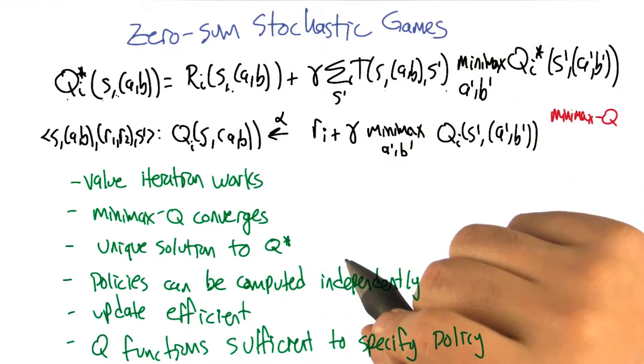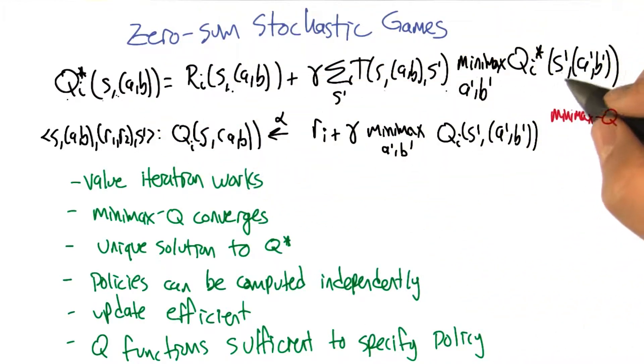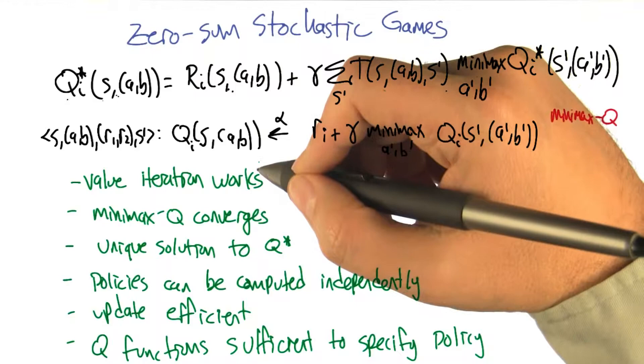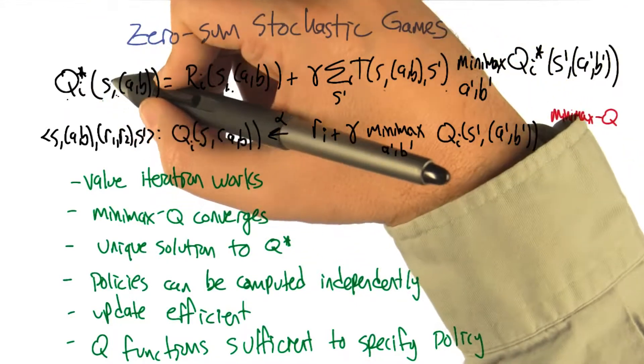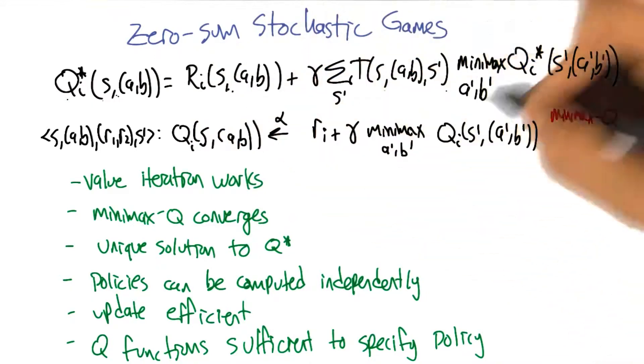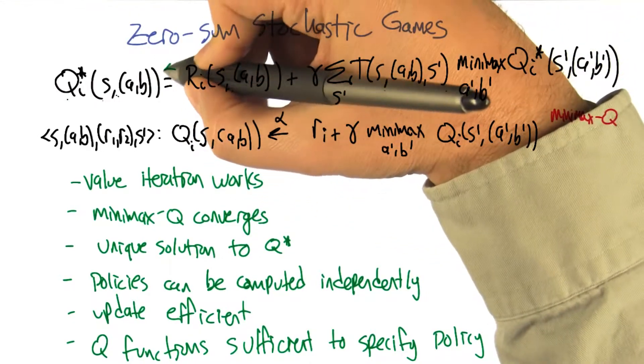Value iteration works. So we can actually solve this system of equations by using the value iteration trick, which is to say we initialize these Q values to whatever and then we just iterate this as an assignment. We just say equals.